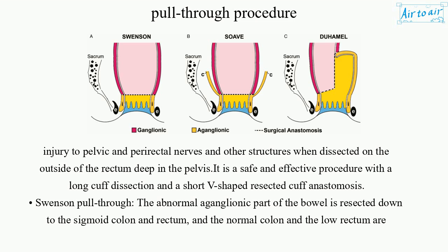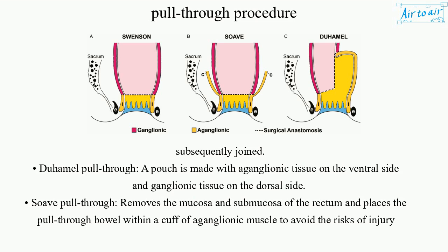Swenson pull-through: The abnormal aganglionic part of the bowel is resected down to the sigmoid colon and rectum, and the normal colon and the low rectum are subsequently joined.